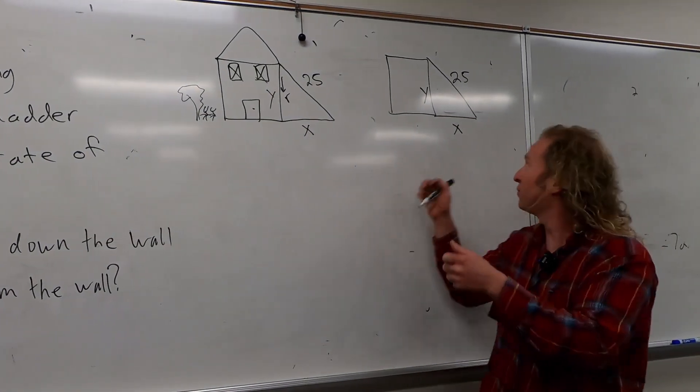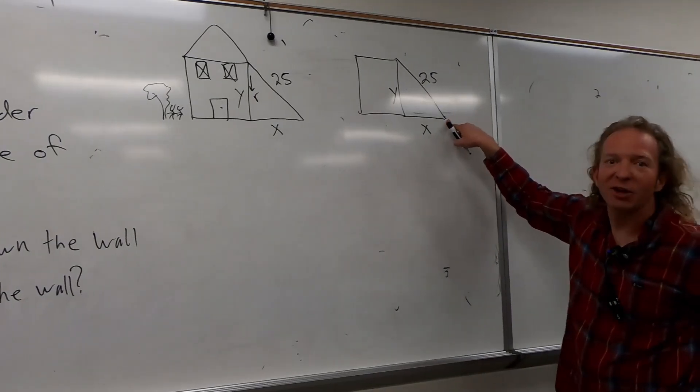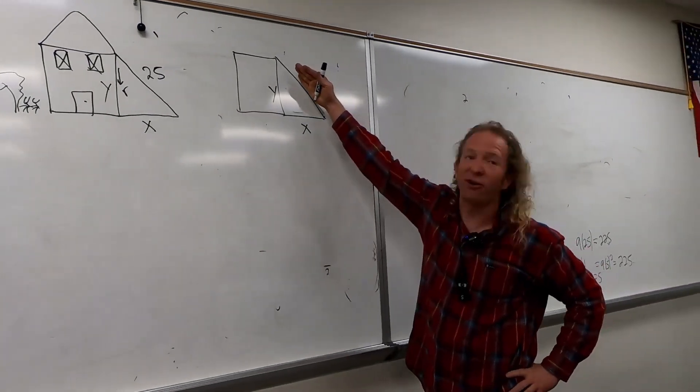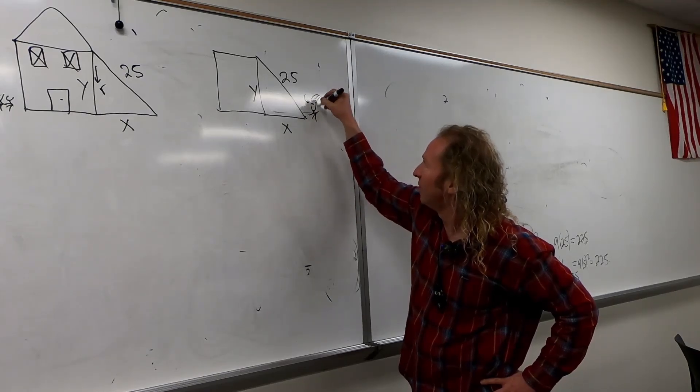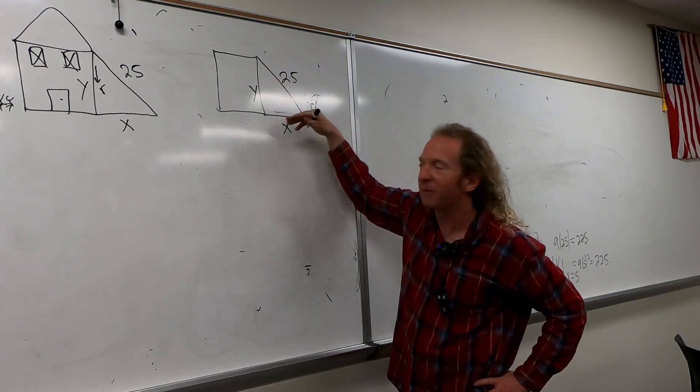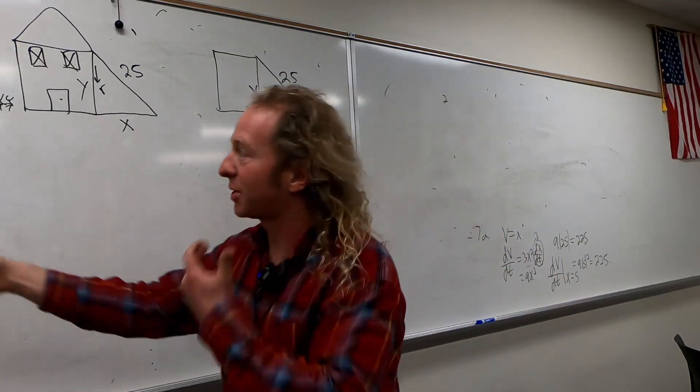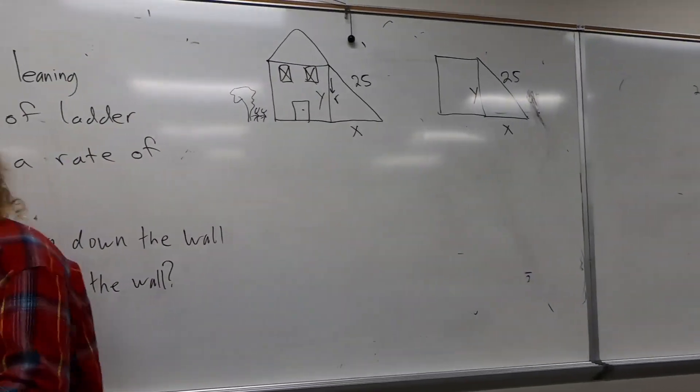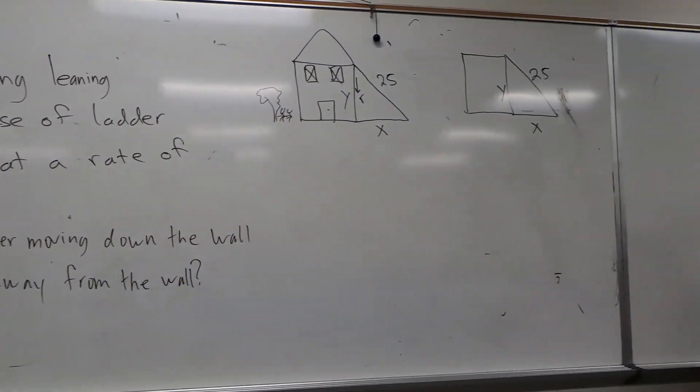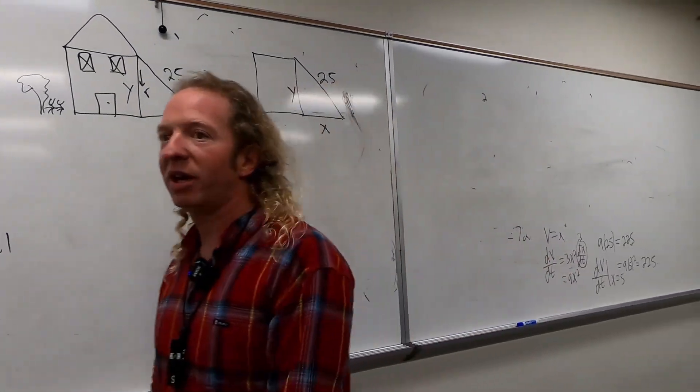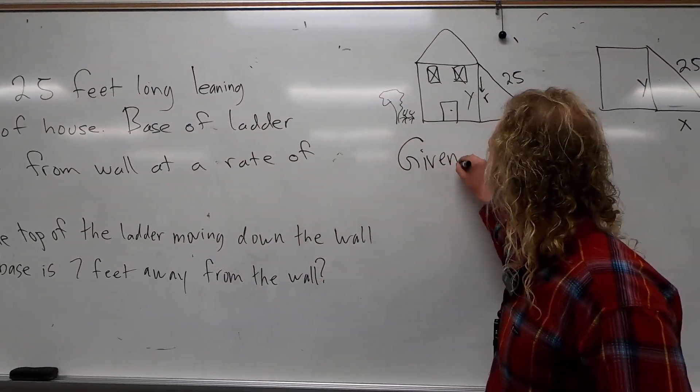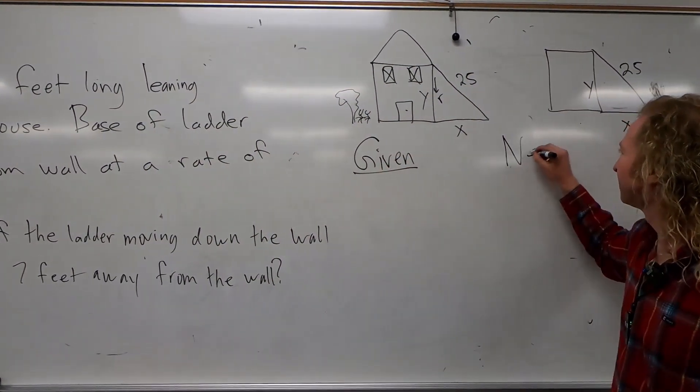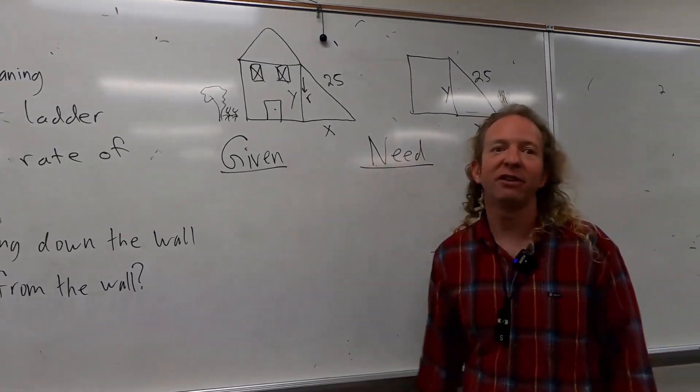So someone is pulling this ladder away. So if there's an evil person here, and they're pulling the ladder away, it's going to fall down. So if there's an evil person here, and they pull it away, it's going to do this. So that's what's happening. So the base of the ladder is pulled away. Someone is pulling the ladder away. All right, so let's write down what we're given and what we need. So given, need.